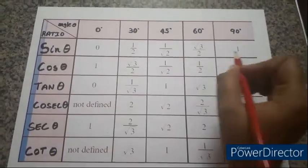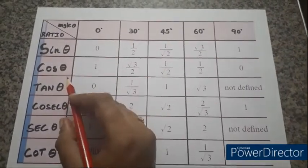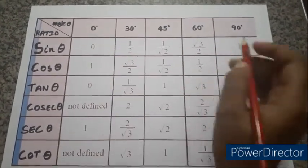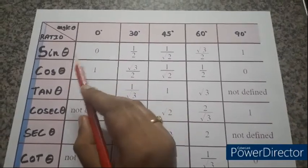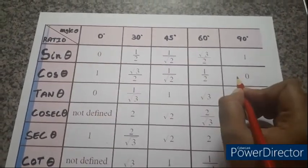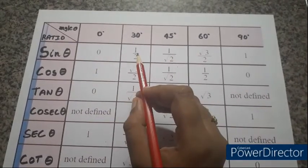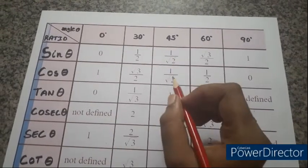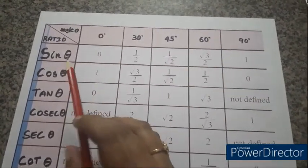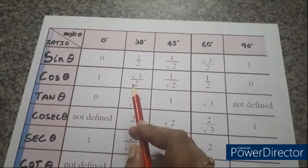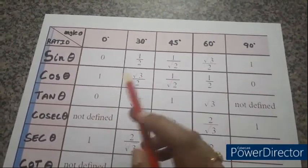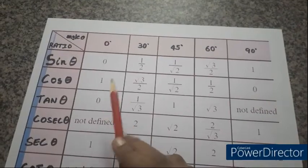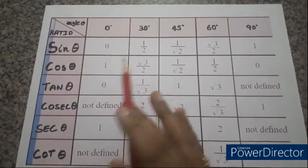For cos theta, put the same numbers but in reverse order — sine theta goes left to right, cos theta goes right to left. So sin 0° = 0 becomes cos 90° = 0, sin 30° = 1/2 becomes cos 60° = 1/2, sin 45° = cos 45° = 1/√2, sin 60° = √3/2 becomes cos 30° = √3/2, and sin 90° = 1 becomes cos 0° = 1.